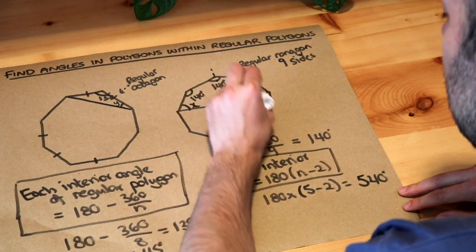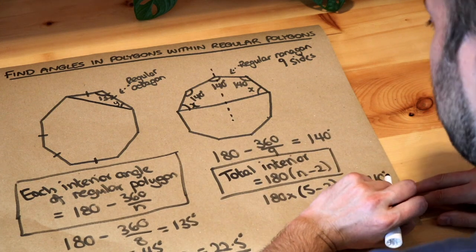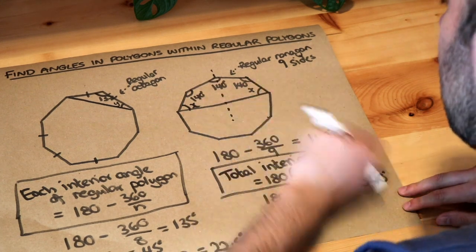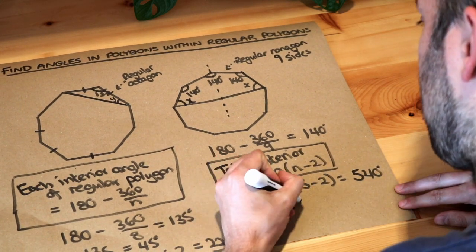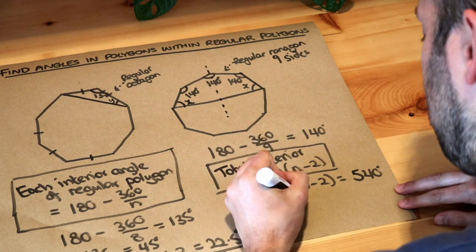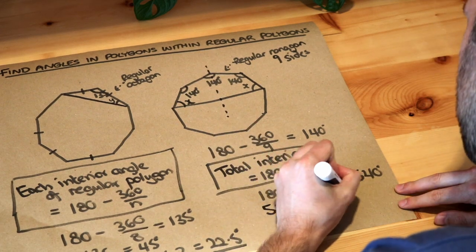So the total of all of these interior angles in this pentagon here is 540. We know these three add up to 140, so we can just do 540, the total of these angles, minus 140 minus 140 minus 140, is 120 degrees.